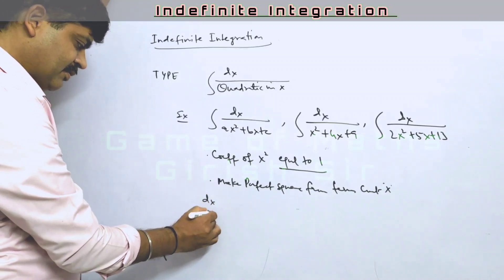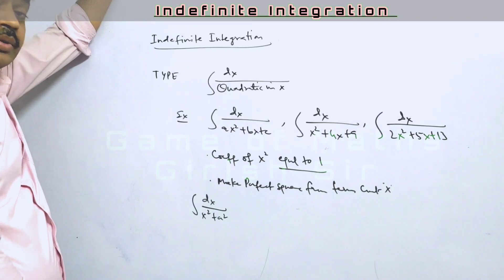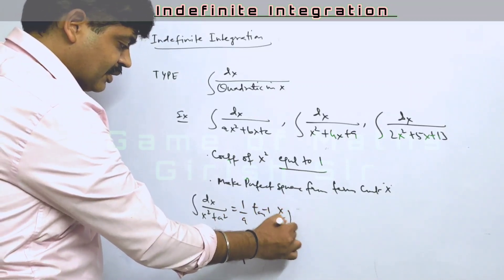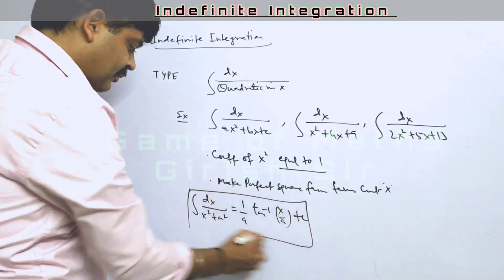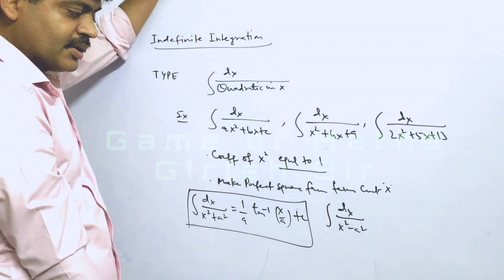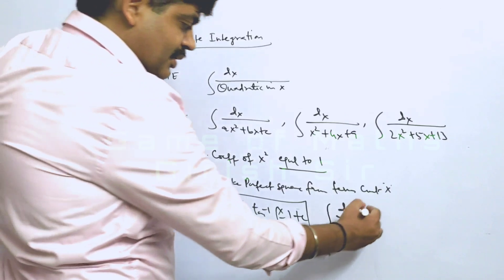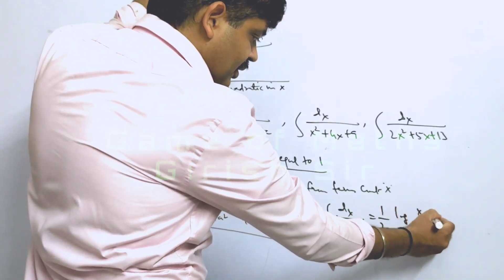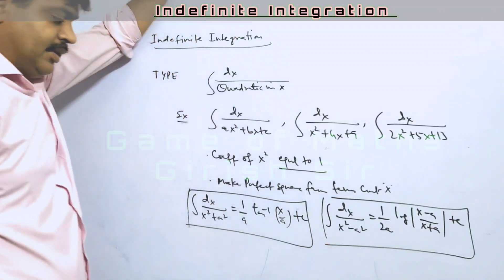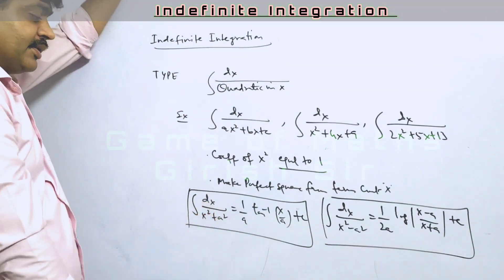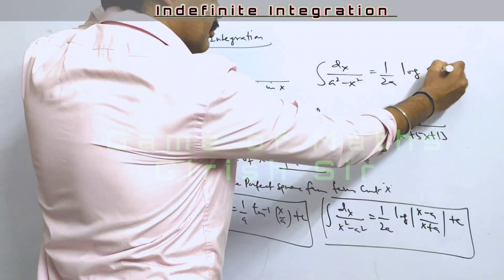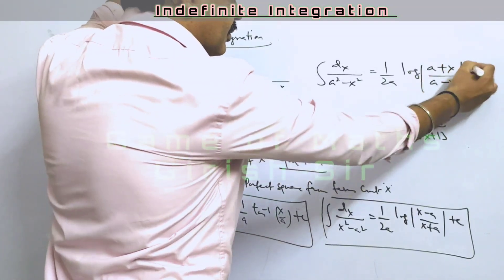The integral may reduce to the form dx/(x² + a²), whose result is (1/a) tan⁻¹(x/a) + c. Or it may reduce to the form dx/(x² − a²), whose result is (1/2a) log|(x − a)/(x + a)| + c. There is also another possible standard form.